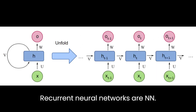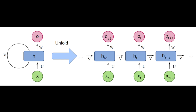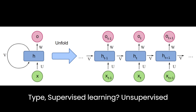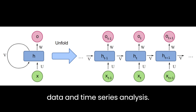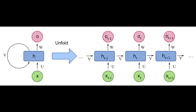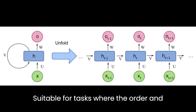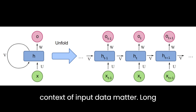Recurrent Neural Networks (RNN). Type: supervised learning, unsupervised learning. Use: designed for sequential data and time series analysis. Suitable for tasks where the order and context of input data matter.